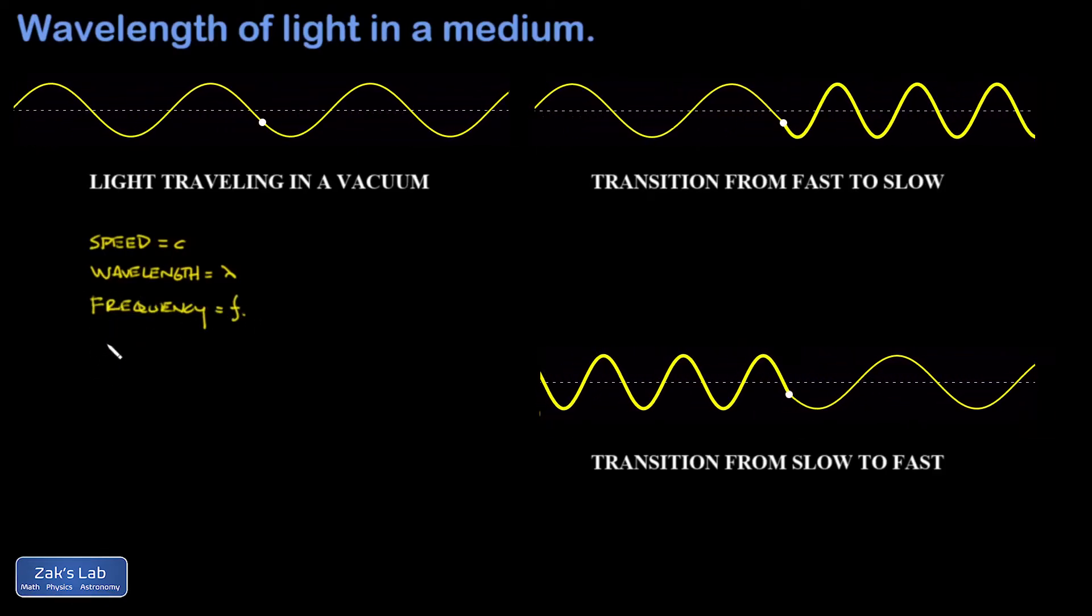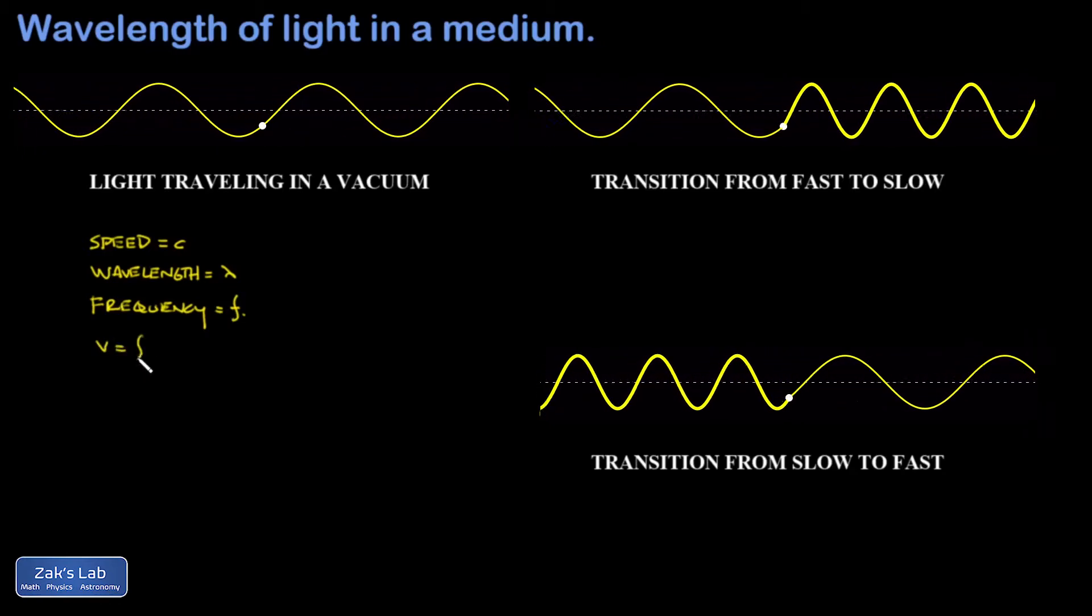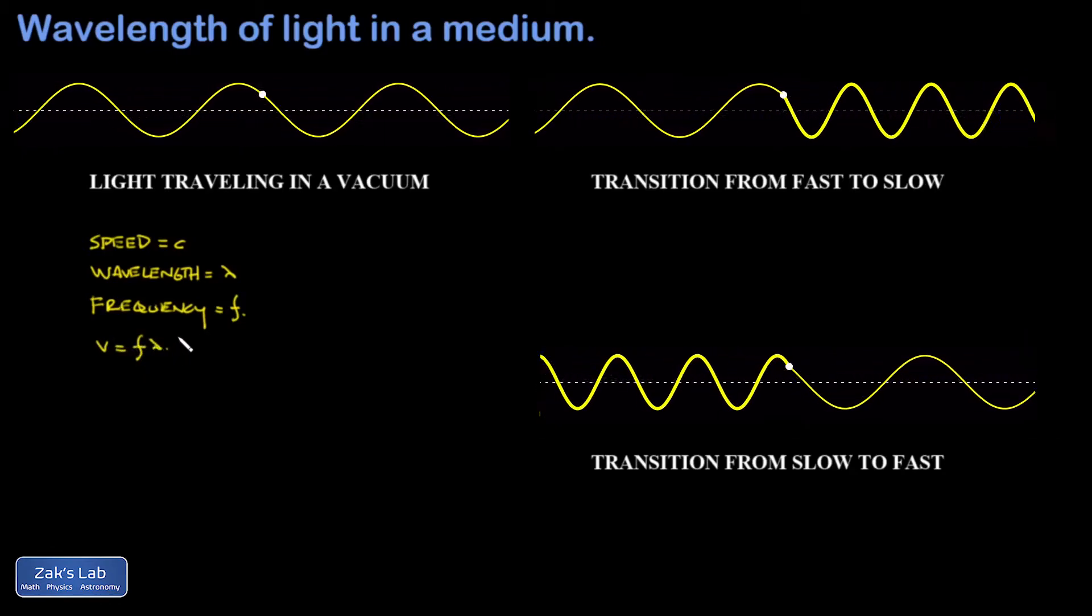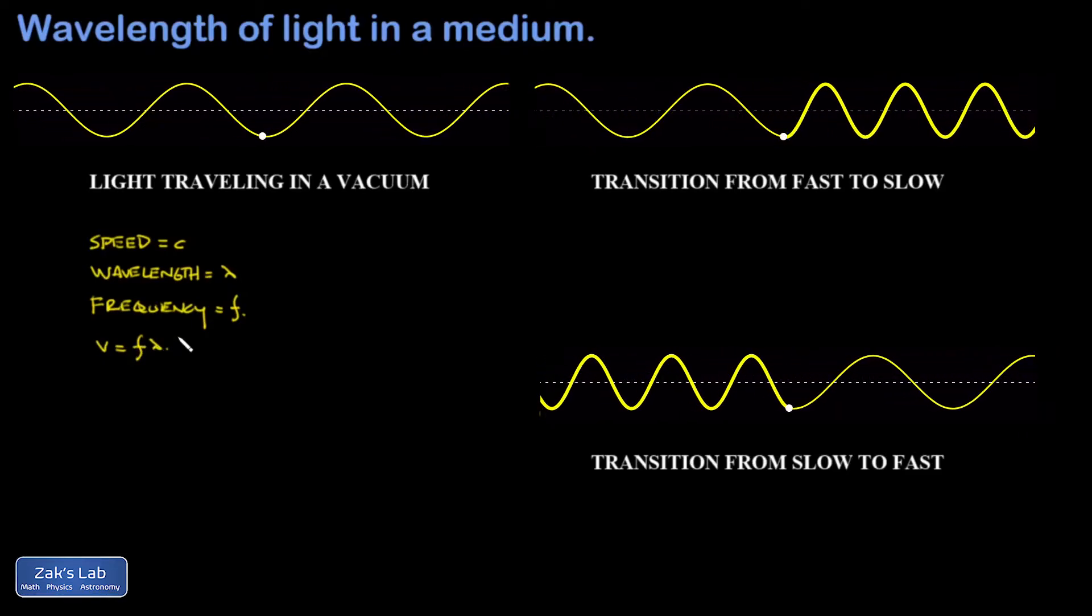And remember, the wave speed equation says V equals F lambda. The speed with which this wave propagates is given by multiplying frequency and wavelength.